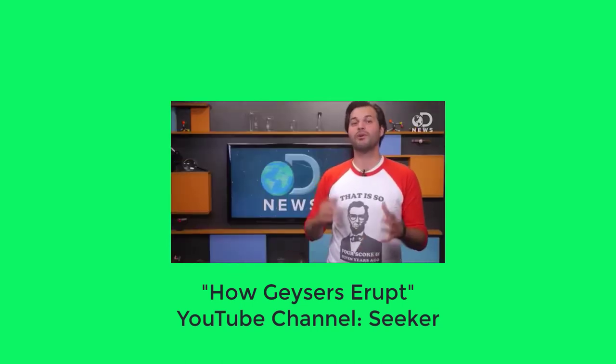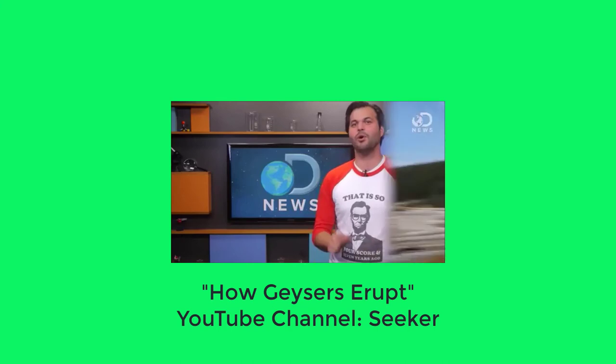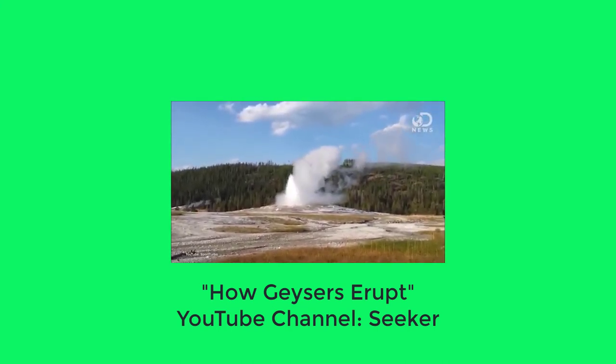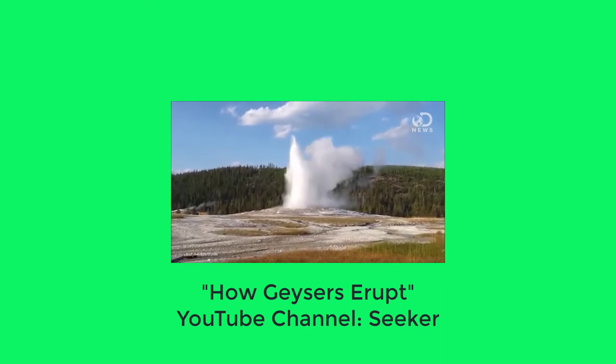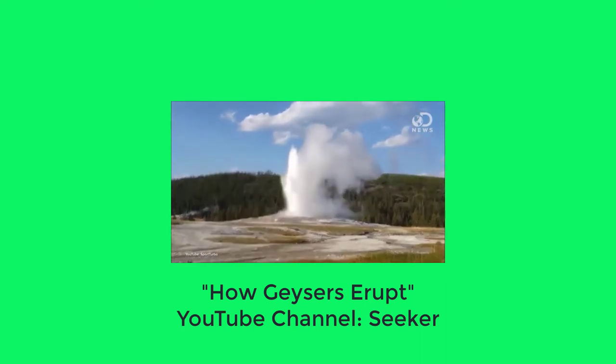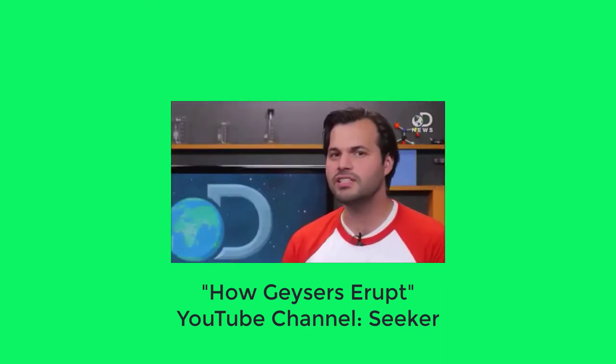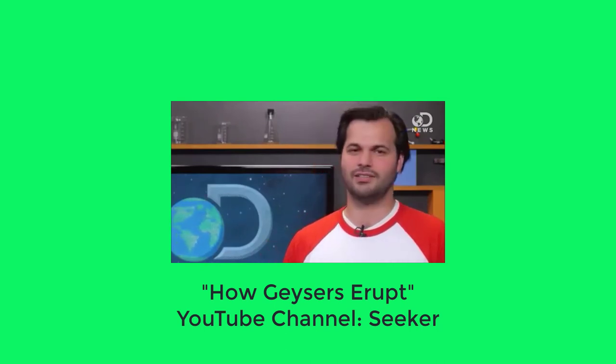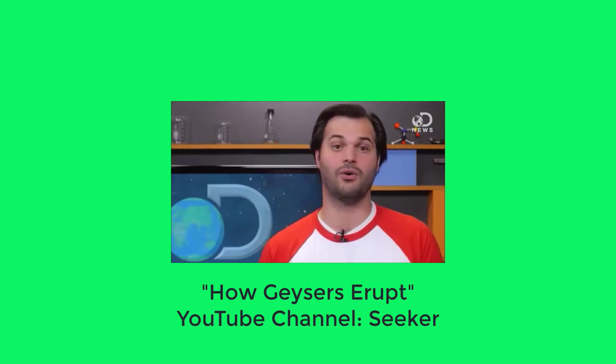Now that we know how geysers work, that other more famous Yellowstone geyser makes more sense. Old Faithful gets its name because that particular one erupts about every 45 to 110 minutes. It must have a constant level of heat and pressure under there. The steamboat geyser may not go off again for a while.